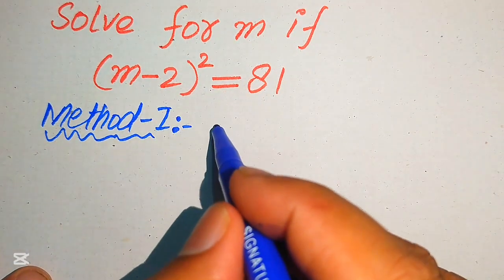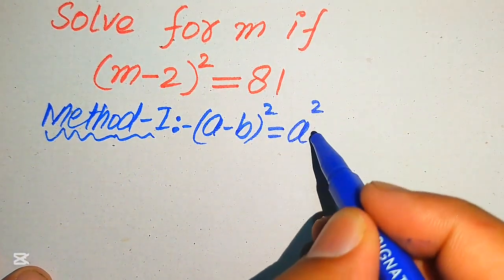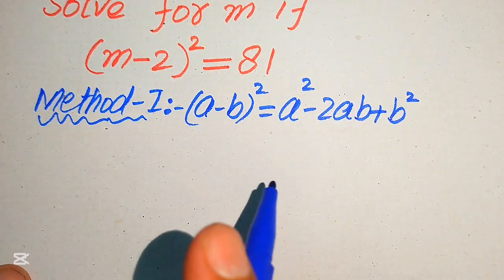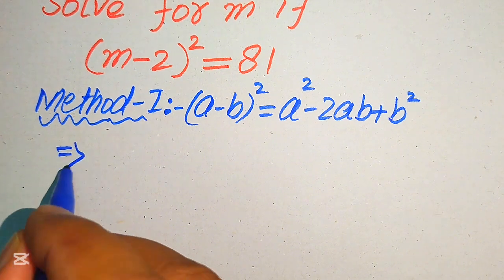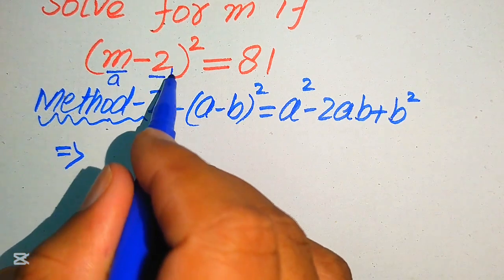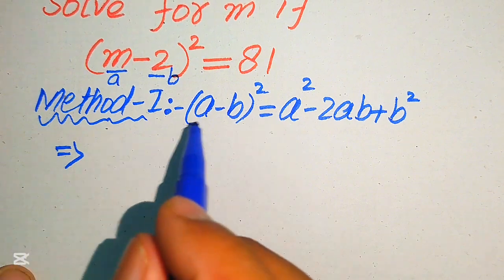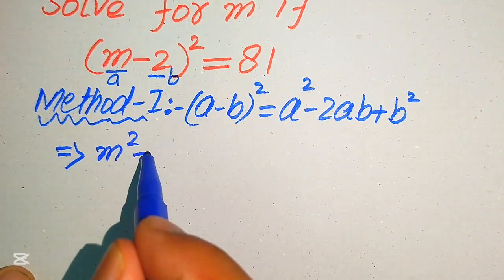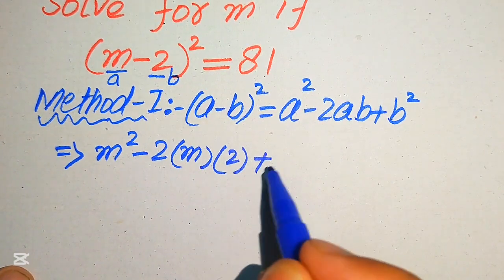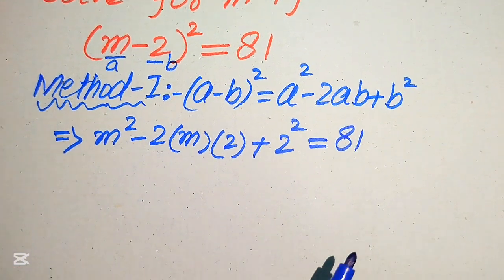First, we solve this problem using the algebraic formula: (a minus b) whole square equals a squared minus 2ab plus b squared. According to this formula, we identify a equals m and b equals 2, and expand the left-hand side accordingly: a squared is m squared, minus 2 times a times b, plus b squared.